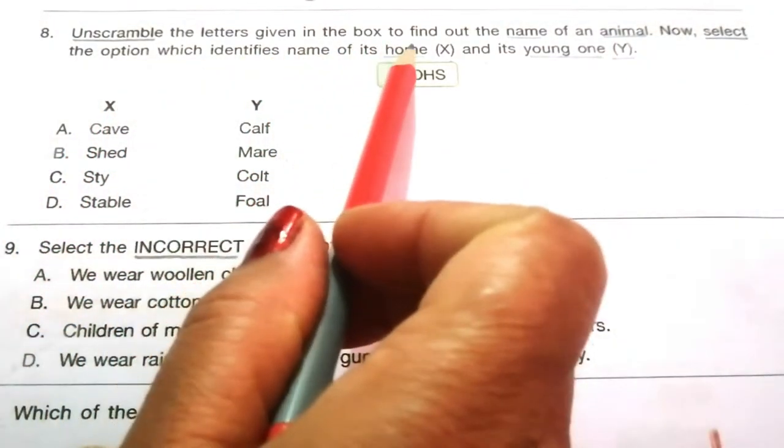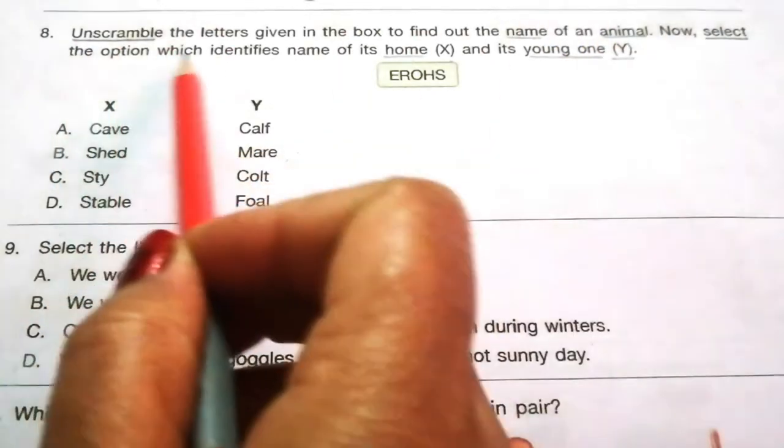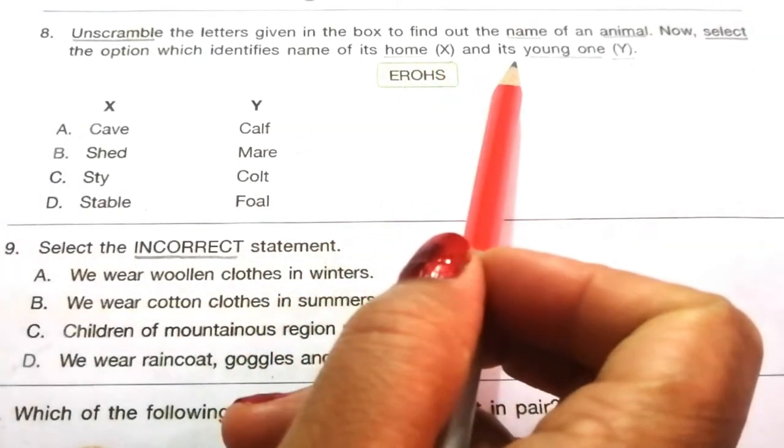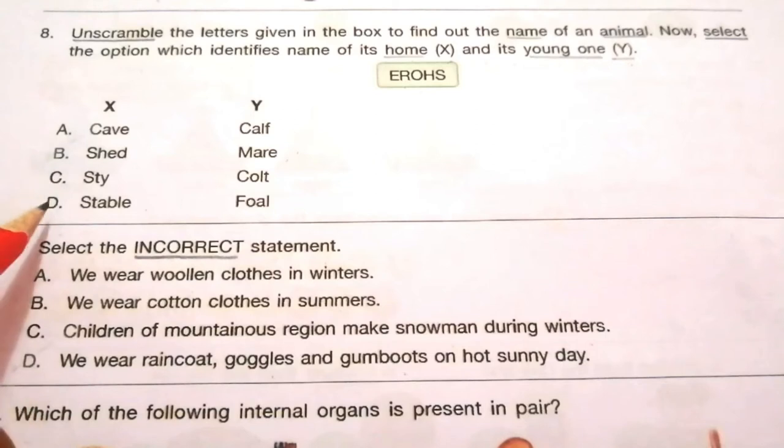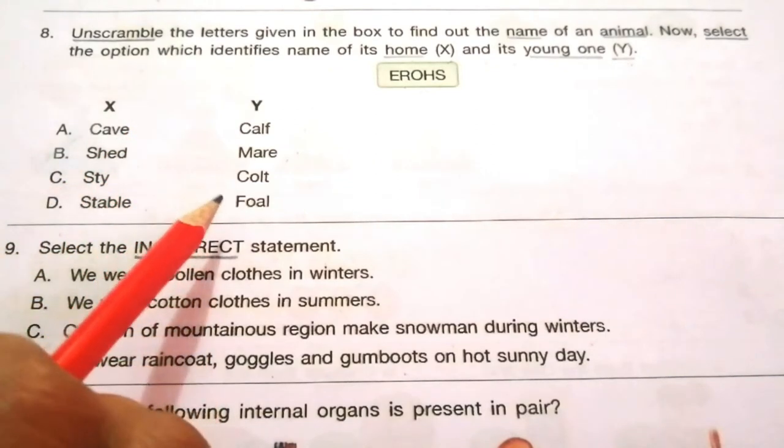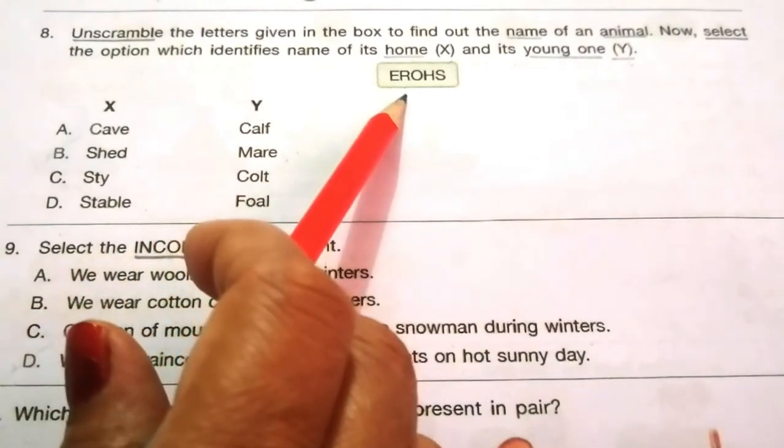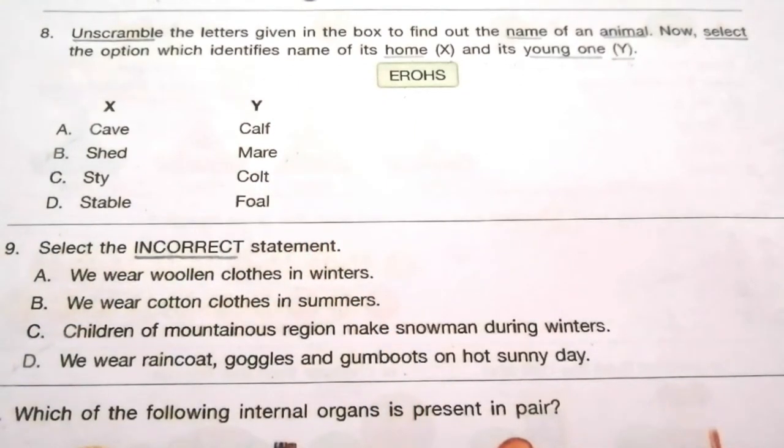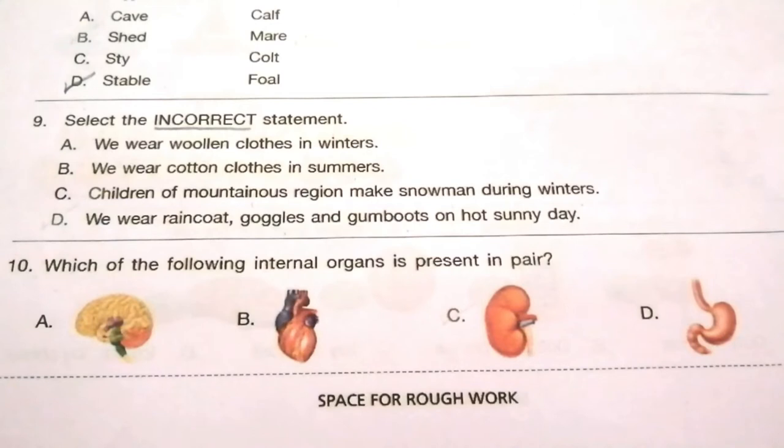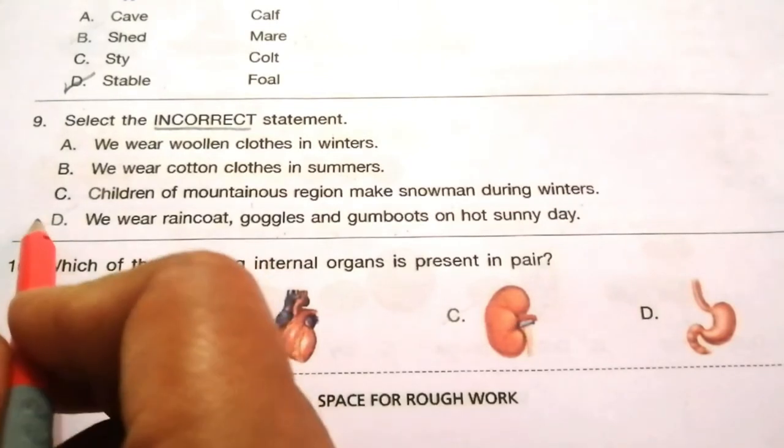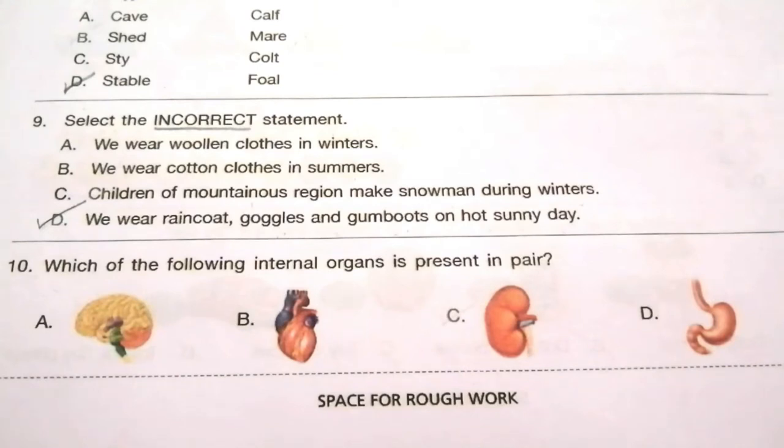Question 8: Unscramble the letters to find the name of an animal, then select the option which identifies its home X and young one Y. If we unscramble this, we will get horse. So the answer is D, stable and foal. Question 9: Select the incorrect statement. We wear woolen clothes in winters, cotton clothes in summers, children make snowman in winters, we wear raincoat and gumboots on hot sunny day. The incorrect answer is D.